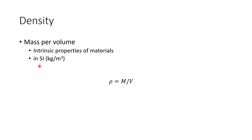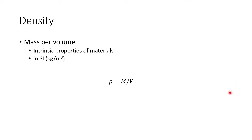Density is an intrinsic property of the material. Meaning, if you pick a piece of material at a given temperature and pressure, it would have a constant rho. Intrinsic property means no matter how much you add the mass of a thing, it would have a constant value of such property. And density is an intrinsic property of a material.